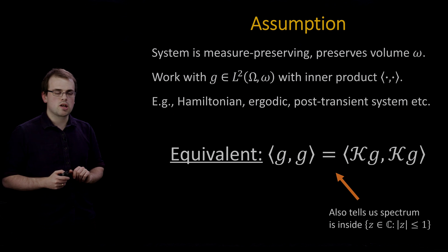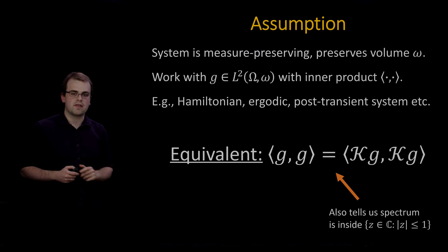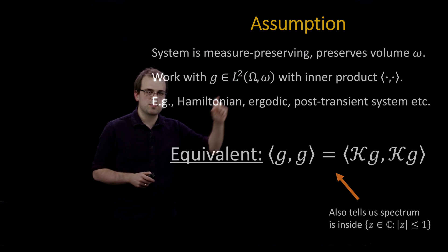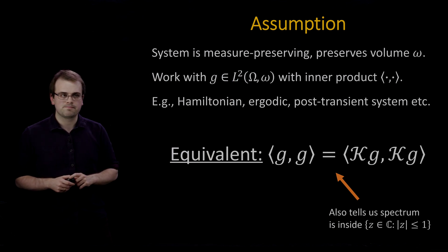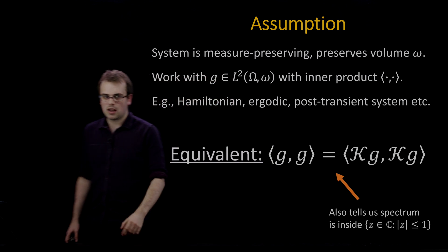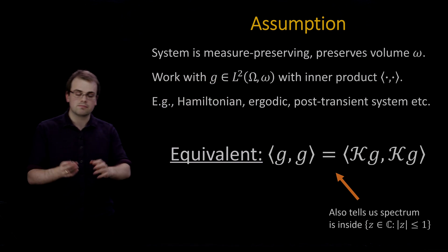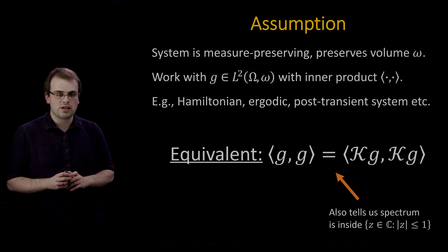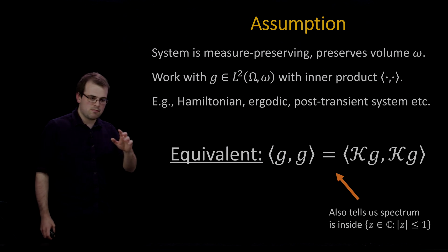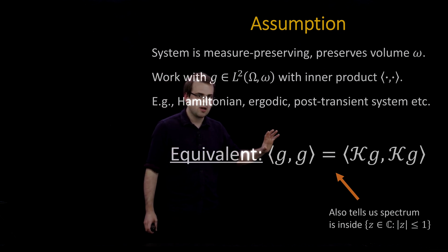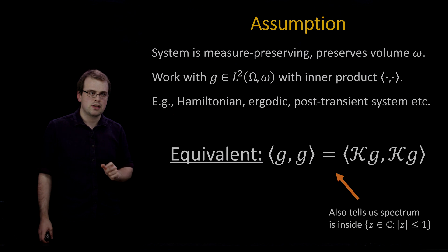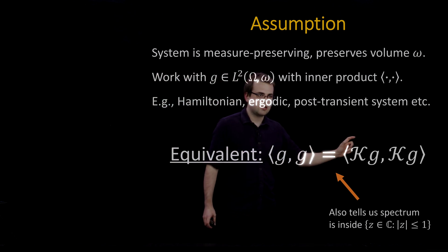Throughout this talk, we make an assumption that the system is measure-preserving with respect to a volume or measure omega. This allows us to work in an L2 space — a space of square-integrable functions — with an inner product structure. Many systems have a measure they preserve: for example, Hamiltonian, ergodic, or many systems in their post-transient regimes. The key equation is that the Koopman operator preserves the inner product, so the inner product between g and itself equals that between Kg and Kg.